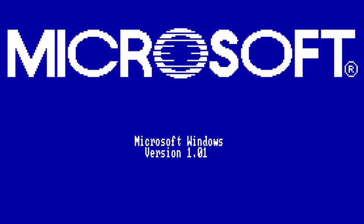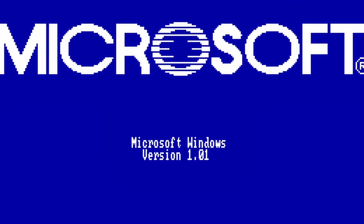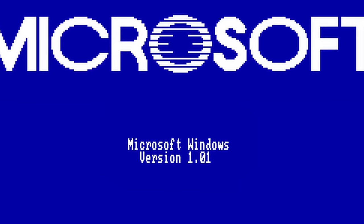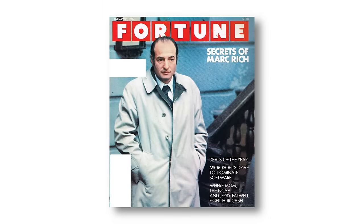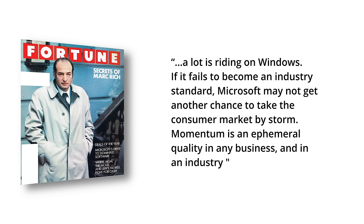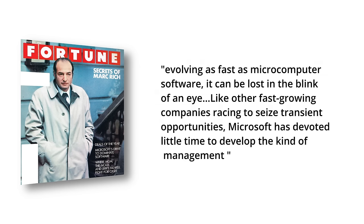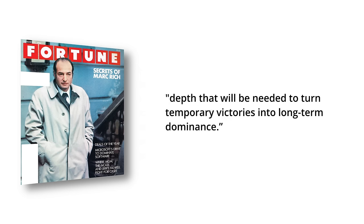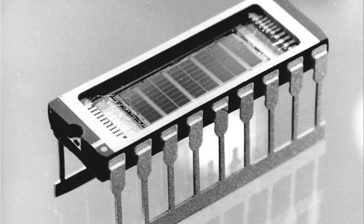Microsoft was still a major — if not the major — third-party Macintosh developer and had been given considerable access to the Macintosh team, Macintosh prototypes, and developer resources. The buzz around the Macintosh just kept building, especially after the famous 1984 Super Bowl commercial, and Windows was just not generating the same level of excitement. Yet the Windows developers grimly kept moving forward — there was a lot riding on Windows, and its failure could take down Microsoft. A January 1984 article in Fortune Magazine laid out the magnitude of Windows failing: 'A lot is riding on Windows. If it fails to become an industry standard, Microsoft may not get another chance to take the consumer market by storm. Momentum is an ephemeral quality in any business, and in an industry evolving as fast as microcomputer software, it can be lost in the blink of an eye.'